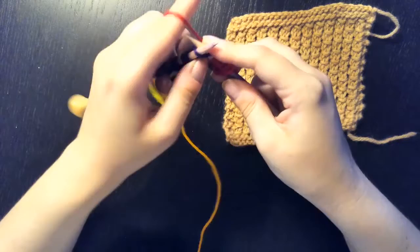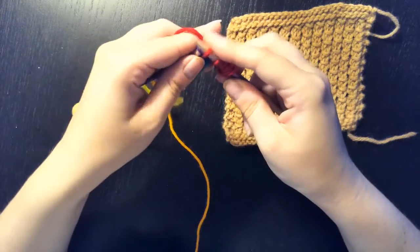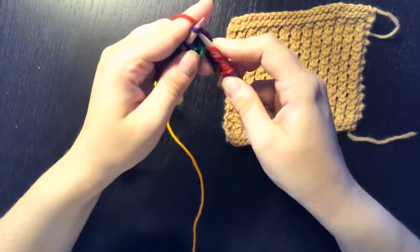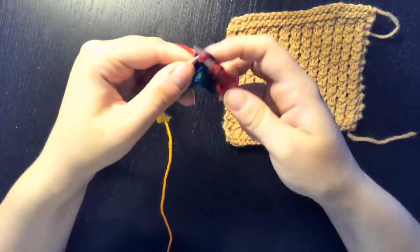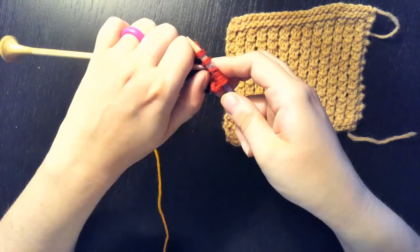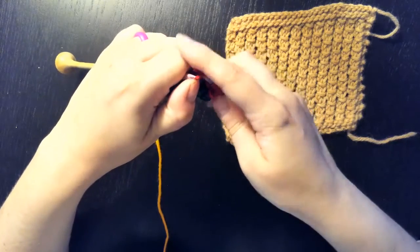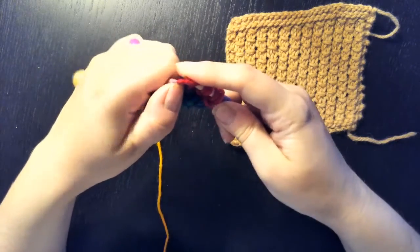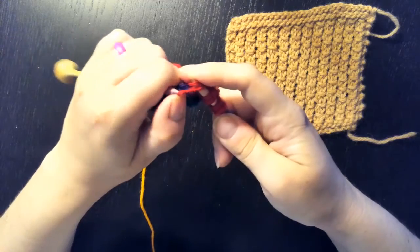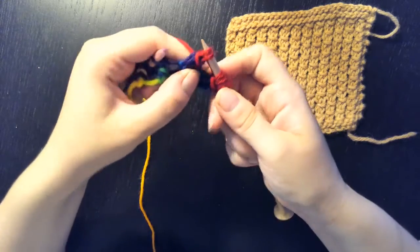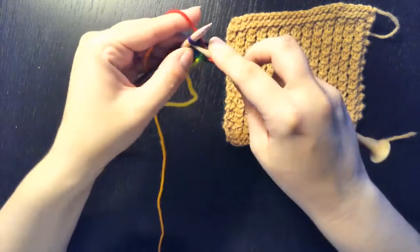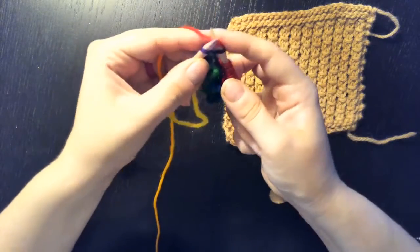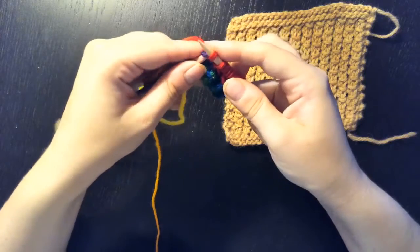Yarn over, knit one, knit two. Pull up your yarn over from the right needle, and pull it over your two knits. And you keep doing that all the way across.